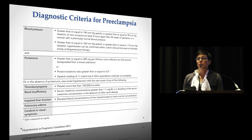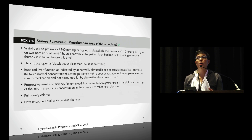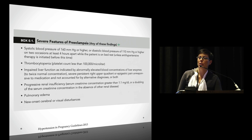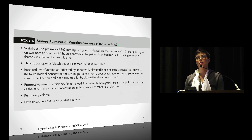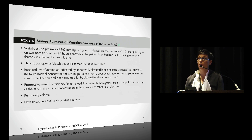You become severe preeclamptic — there is no more 'mild.' You are either preeclamptic or preeclampsia with severe features. We're moving away from mild preeclampsia, and that's important because we'll talk about management changes. Severe features are very similar to what we standardly discuss, but they've taken out IUGR and removed the 5 grams of protein in 24 hours.